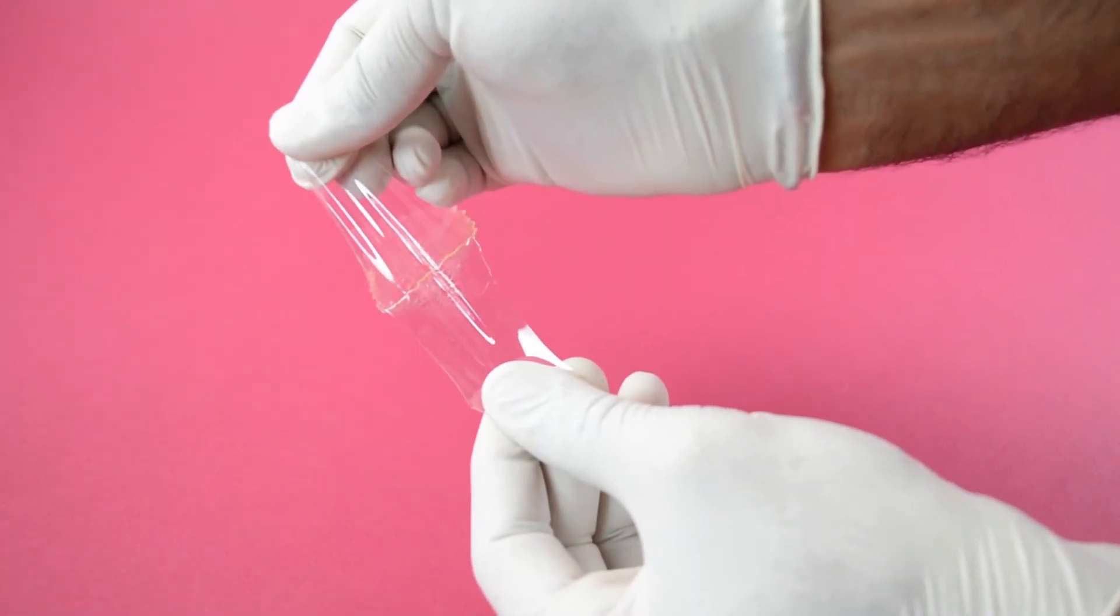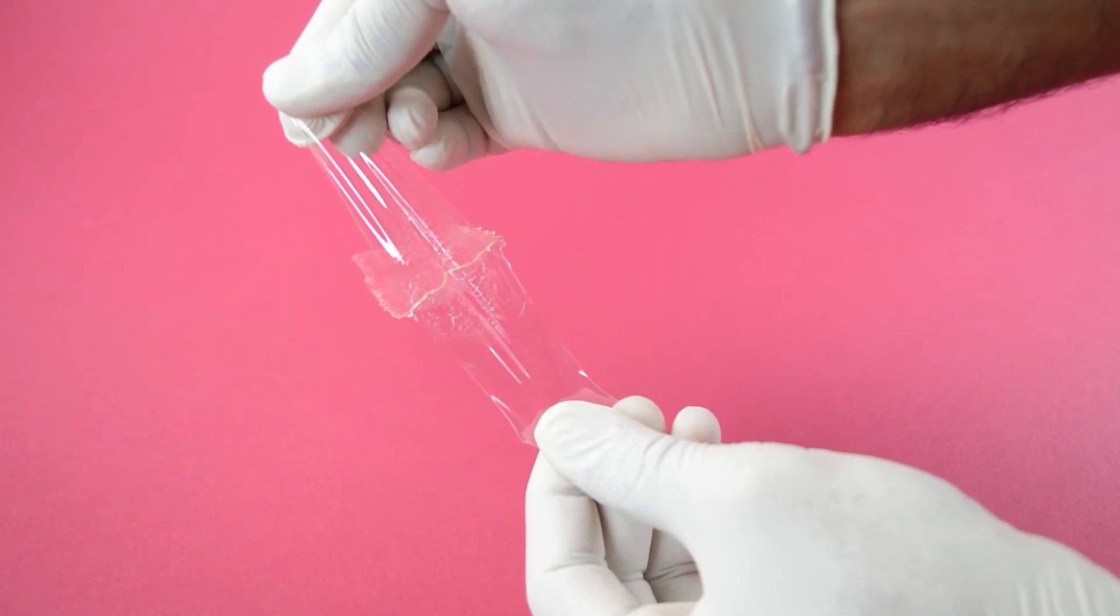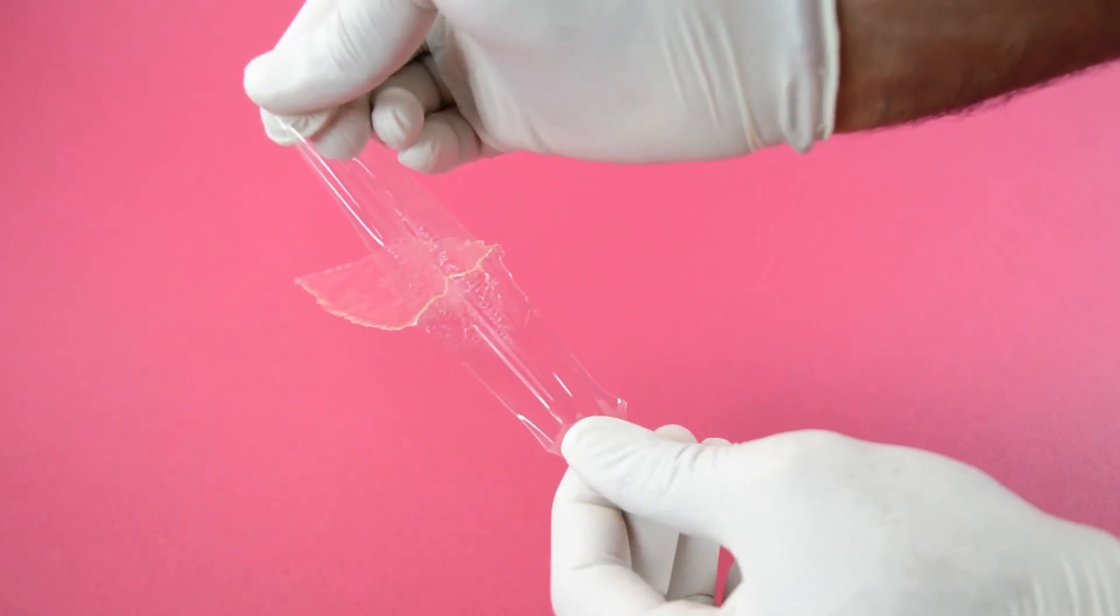When the TPU is bonded using the UV-17 Med, complete substrate failure occurs, with both strips of the TPU being destroyed.